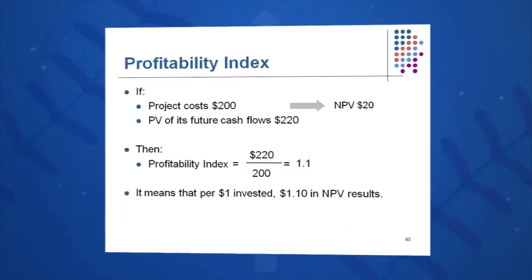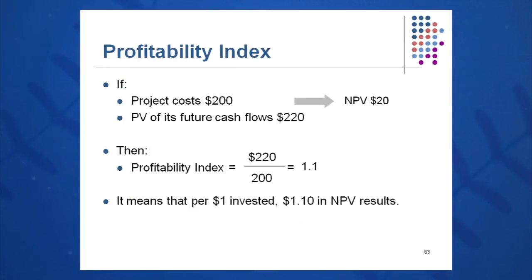Here's an example where my project costs $200. The present value of the cash inflows is $220, so my NPV is $20. The profitability index is benefit-to-cost: 220 divided by 200, or 1.1.